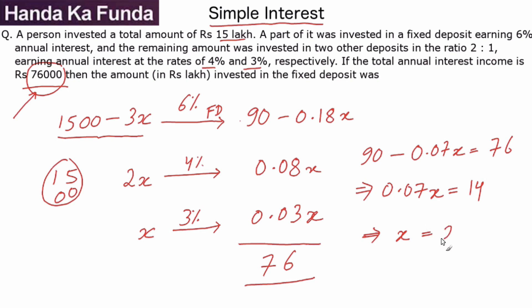Since it is 14 by 0.07, this would be 2 followed by two zeros because there are two decimal places here. So x is 200.